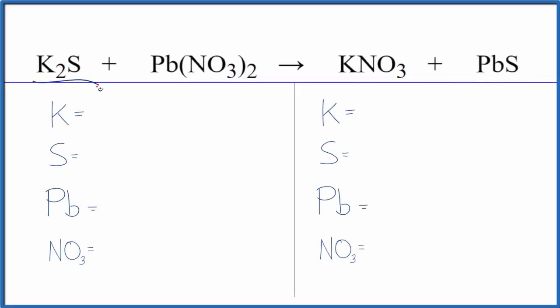Let's balance the equation for K2S plus Pb(NO3)2. This is potassium sulfide and this is lead(II) nitrate. So we'll use a bit of a trick to make this easier. Let's count the atoms first and balance the equation.